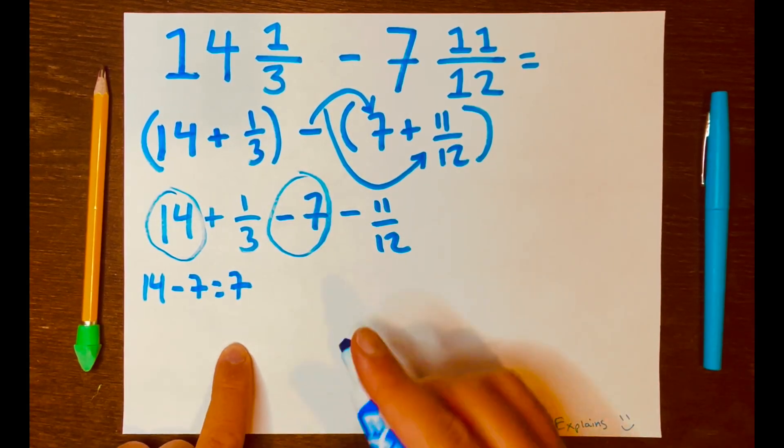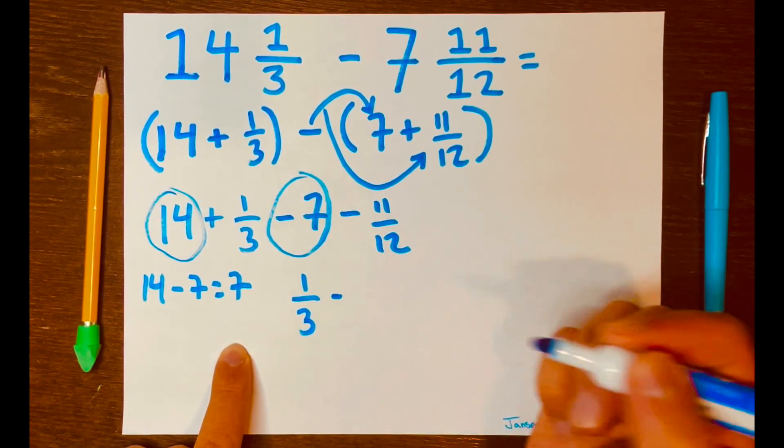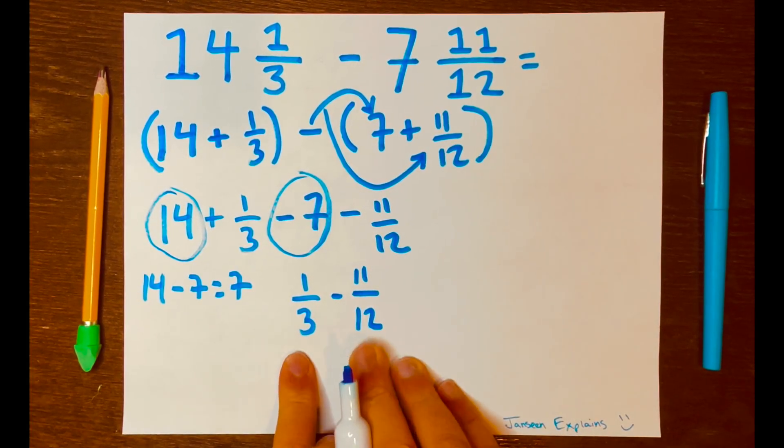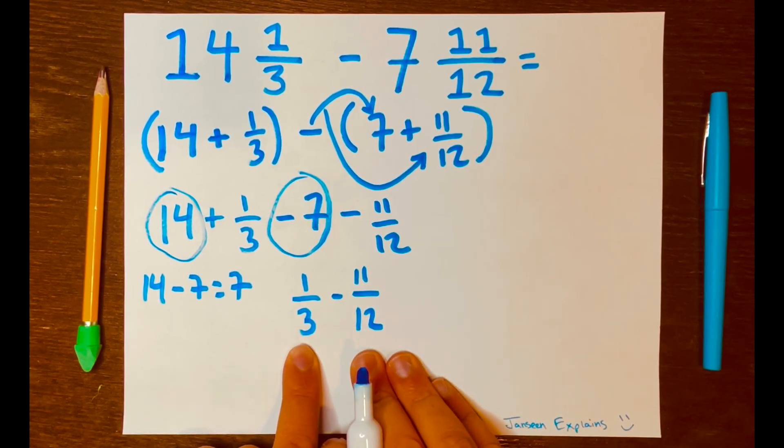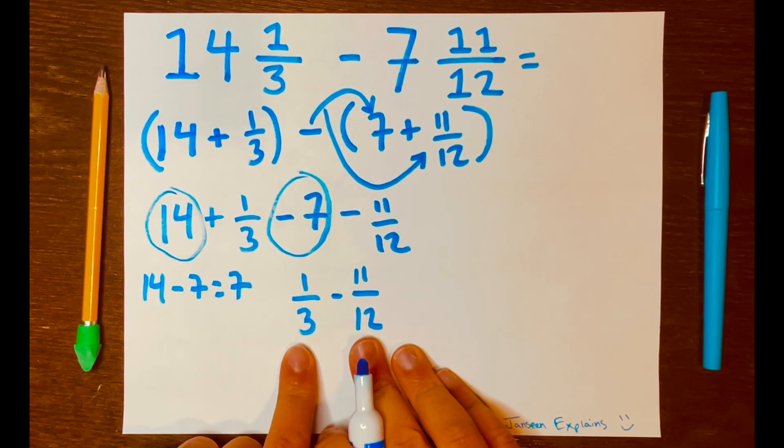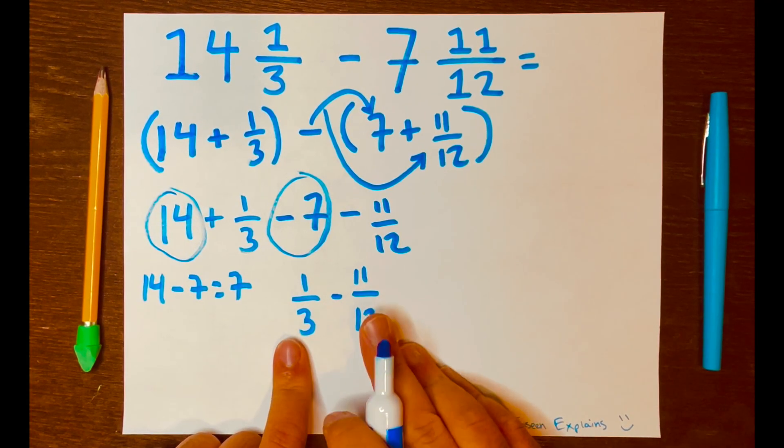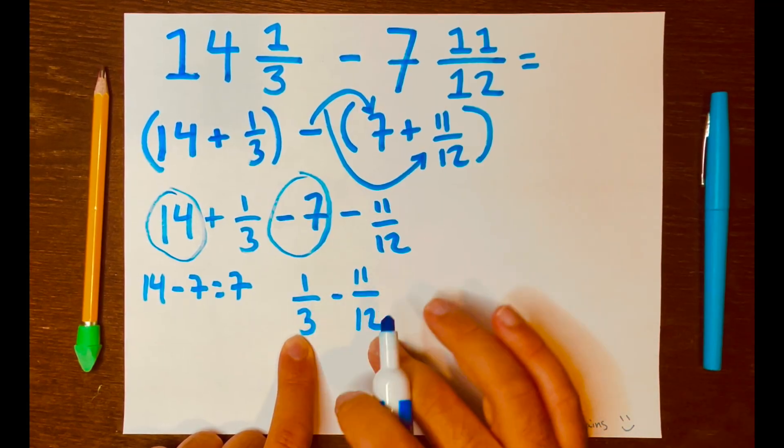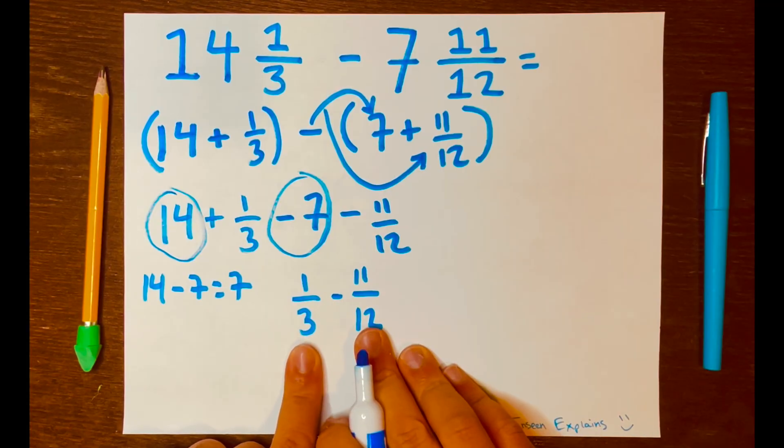And then we're going to solve 1 over 3, minus 11 over 12. Notice that both fractions are unlike fractions, meaning that the denominators are different. So, we need to make our denominators the same because we cannot subtract or add unlike fractions, meaning the denominators are different. We need to make them the same, and so we need to find the lowest common multiple.